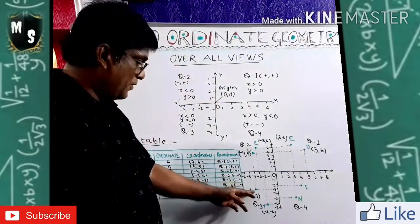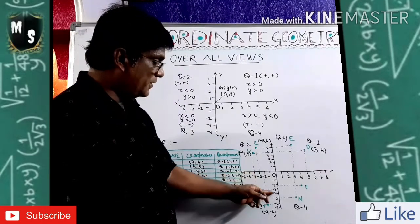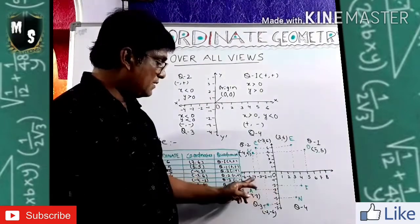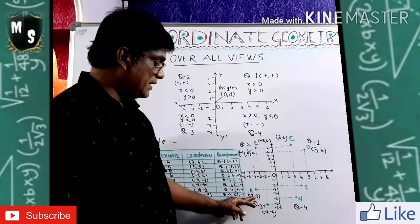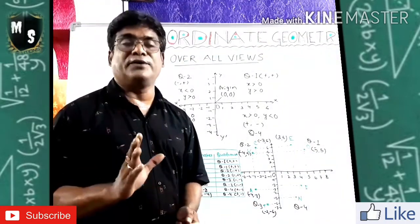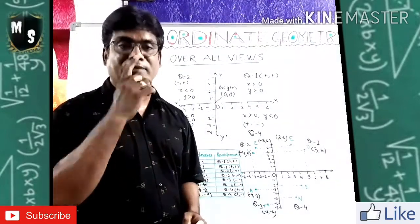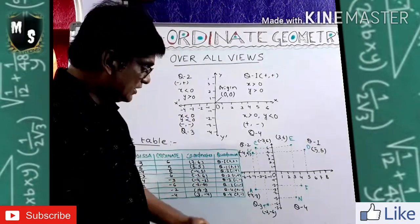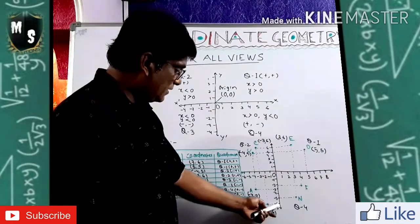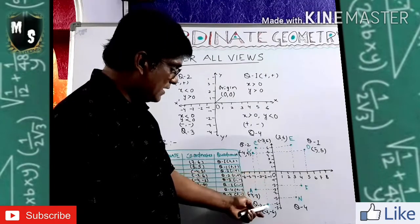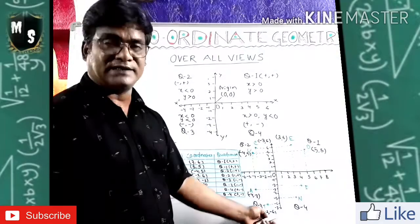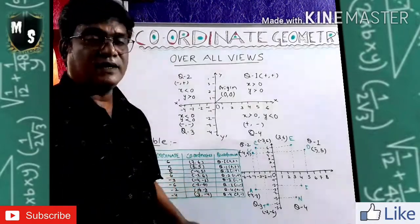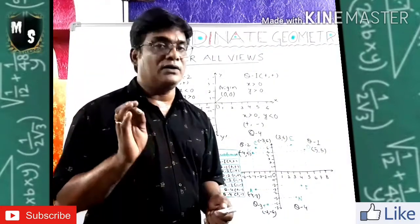For point A: drop perpendicular to X-axis and Y-axis. It meets at X = -4 and Y = -3. Both coordinates are minus — coordinate pair (-4, -3) — minus-minus — quadrant three. For point T: perpendicular meets X at -2 and Y at -6. Coordinate pair is (-2, -6). Both negative — negative-negative — quadrant three.